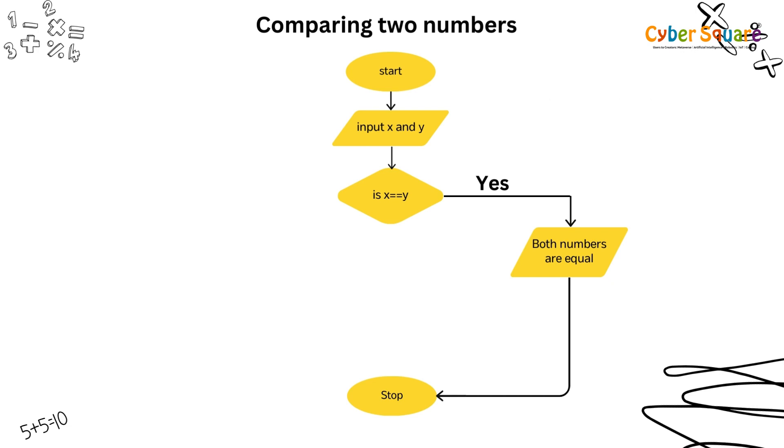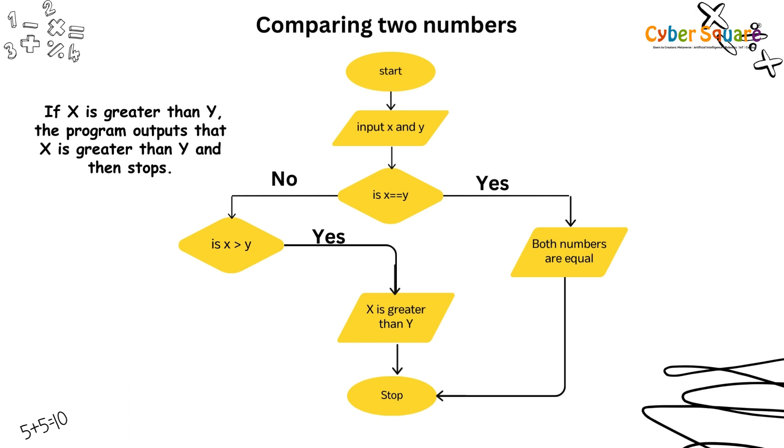If x is not equal to y, the program then checks if x is greater than y. If x is greater than y, the program outputs that x is greater than y and then stops.